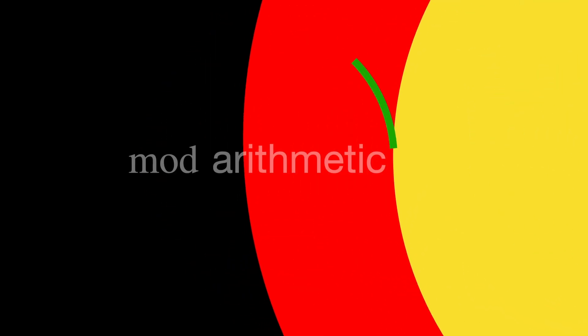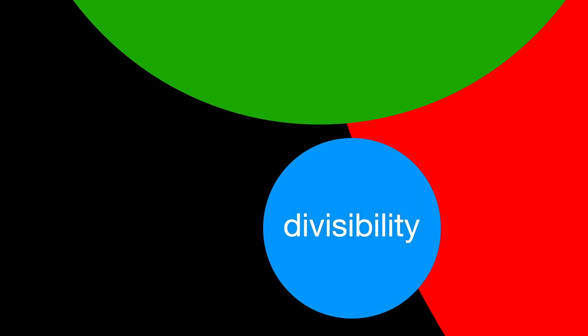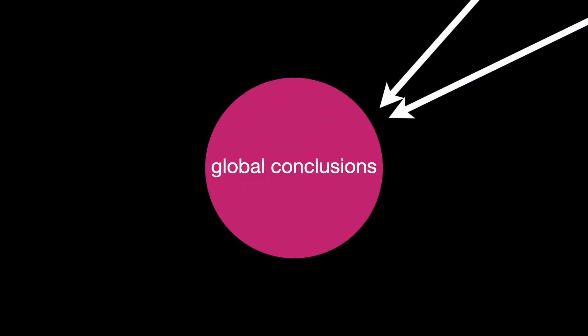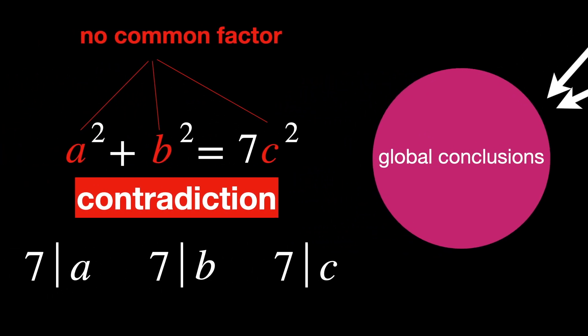Techniques such as modular arithmetic and properties of divisibility — for example, 7z squared implies that z is divisible by 7 — demonstrate how local properties, such as modulo primes, influence global conclusions, like the non-existence of rational solutions. Though it's not obvious so far, the solution of Diophantine problems is classified as part of geometry, because their solutions can be interpreted as points on a geometric object, which is why this entire field is called arithmetic geometry.